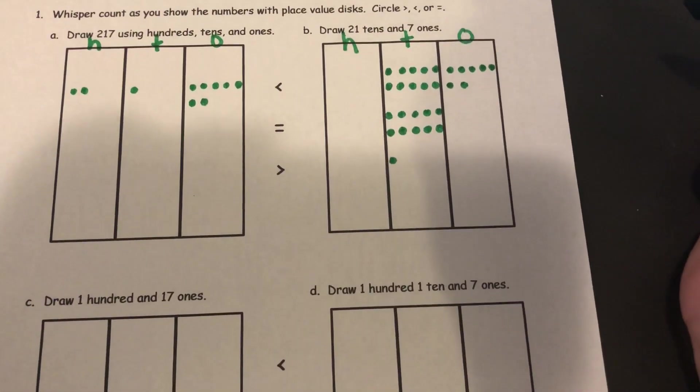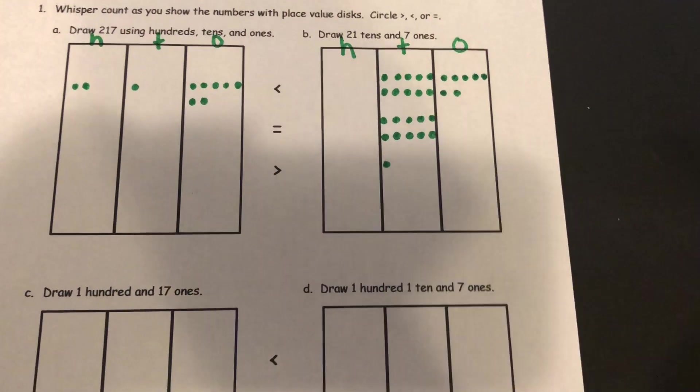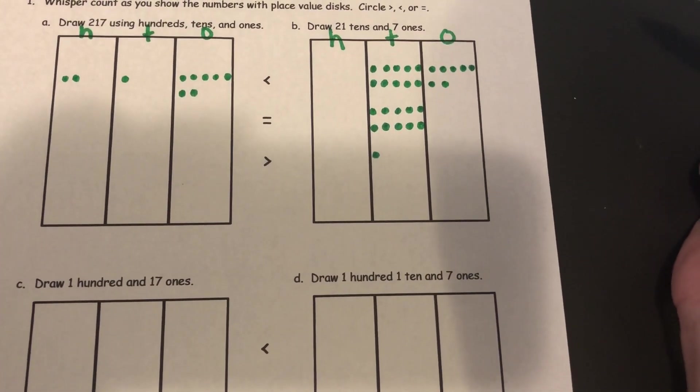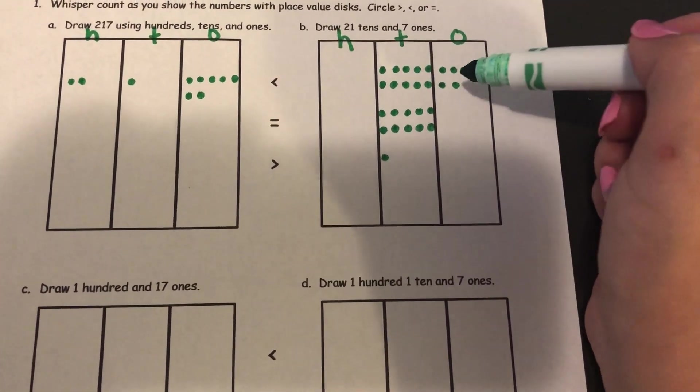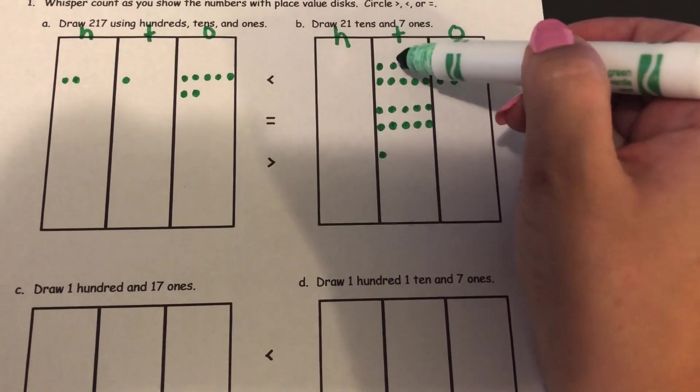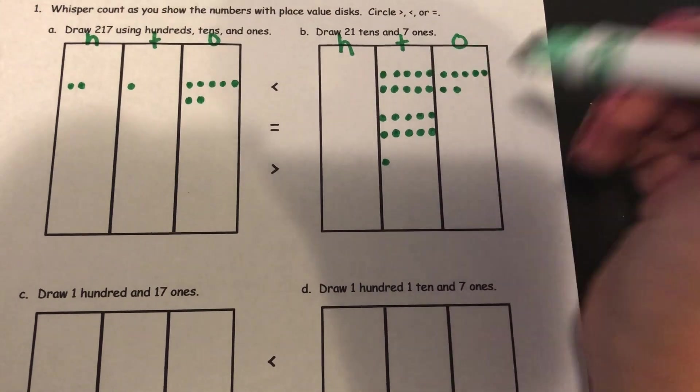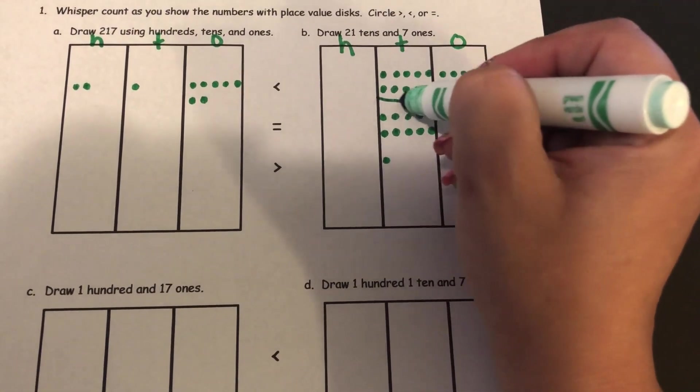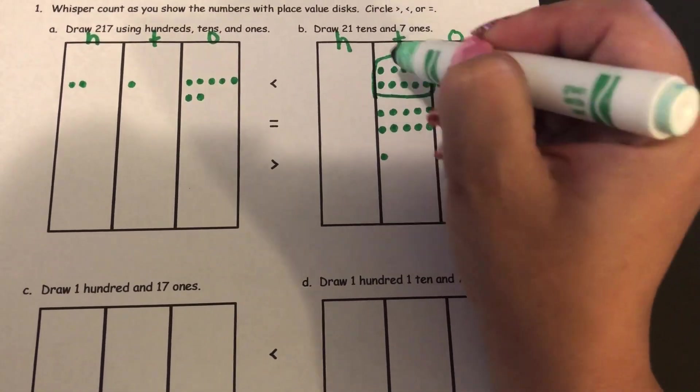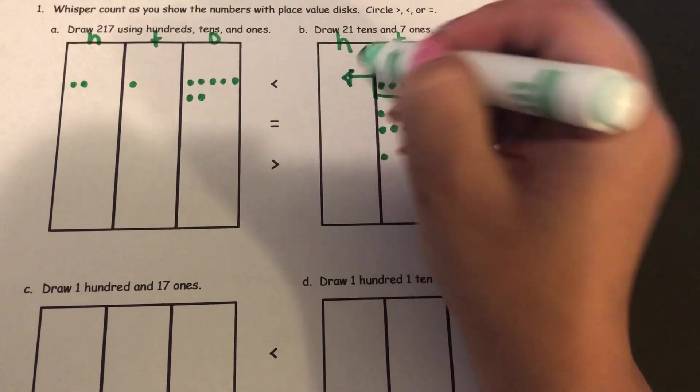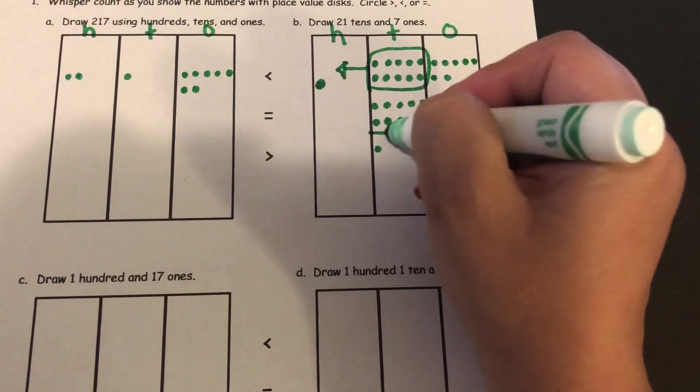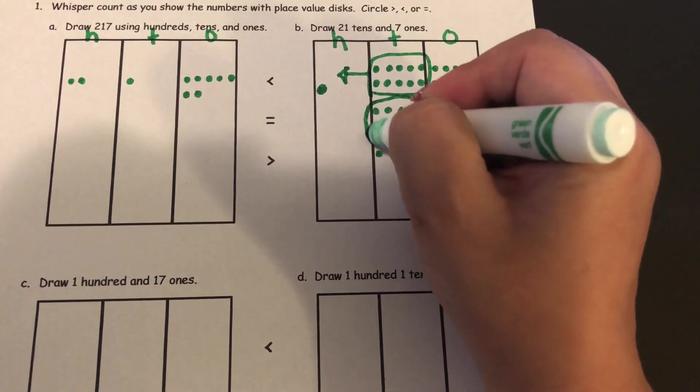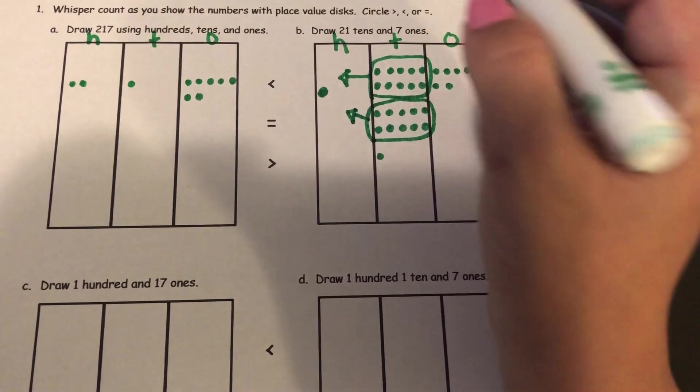All right, so before I can compare these two numbers I need to bundle some of my tens up. So anytime I've got a group of ten I'm going to bundle it up and I'll turn it into the next place value. So I know that ten tens makes a hundred. And I have another set of ten tens. I'm going to circle them up. I'm going to move those over as well.